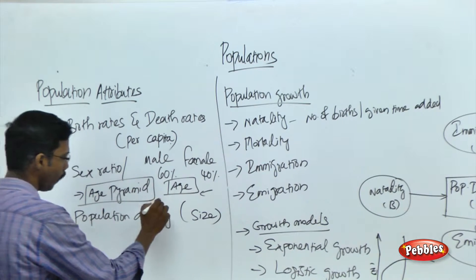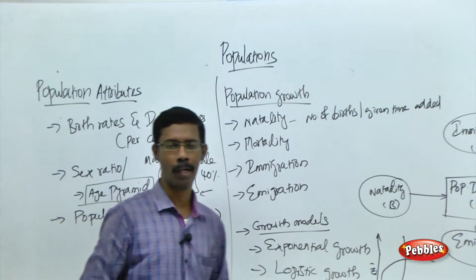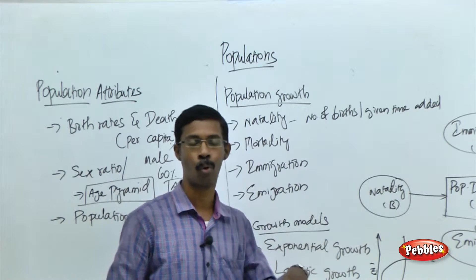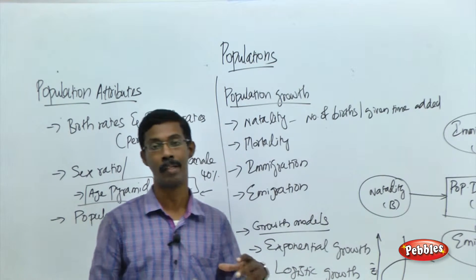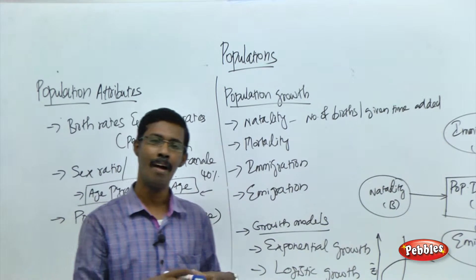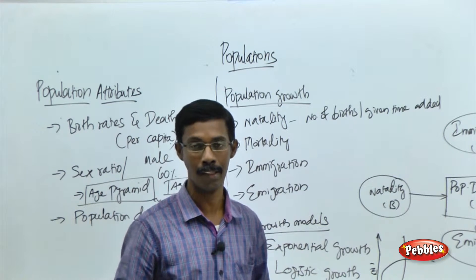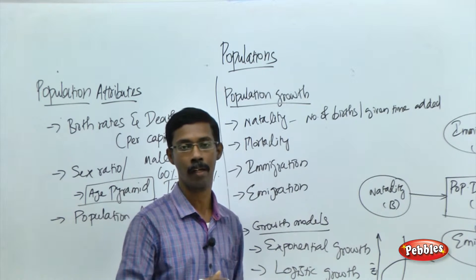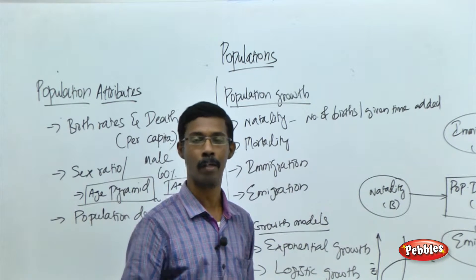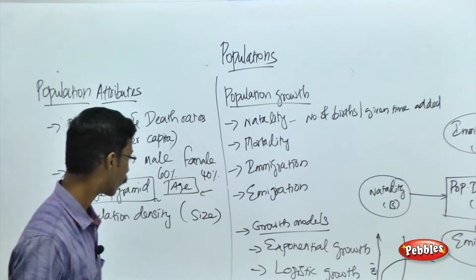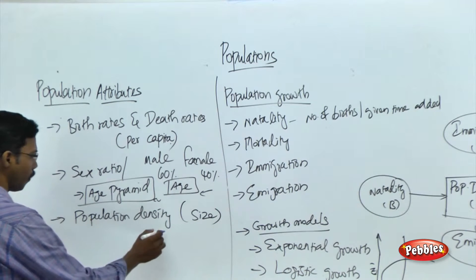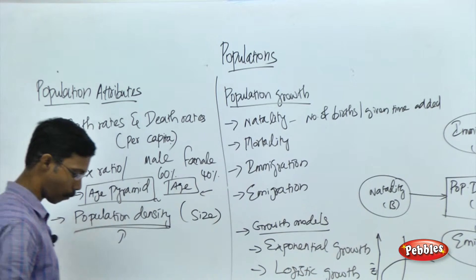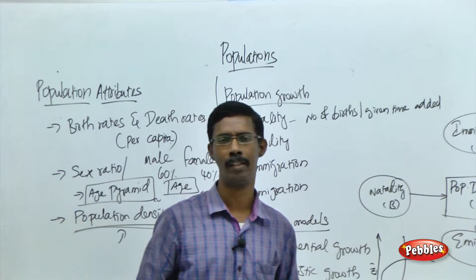If we plot the age distribution of individuals in the population against the population density, we will get the age pyramid. The age pyramid will roughly give the idea of whether the particular population is growing, declining, or in a stable condition. From the age pyramid, we can get a rough idea of the particular population.